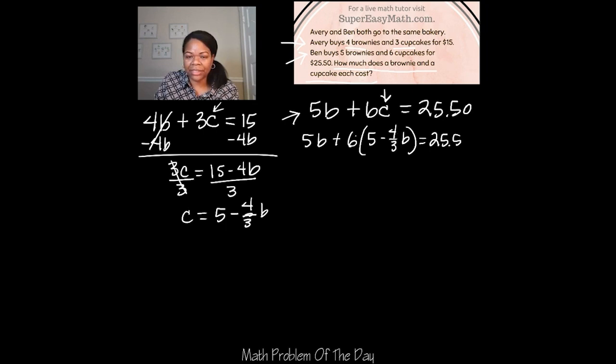I got minus 3B equals negative 4.5. Now I divide by negative 3 on both sides and I'm left with B equals 1.5. So B, remember we use B to be the variable for the brownies, so this is telling me that the brownies cost a dollar fifty cents.